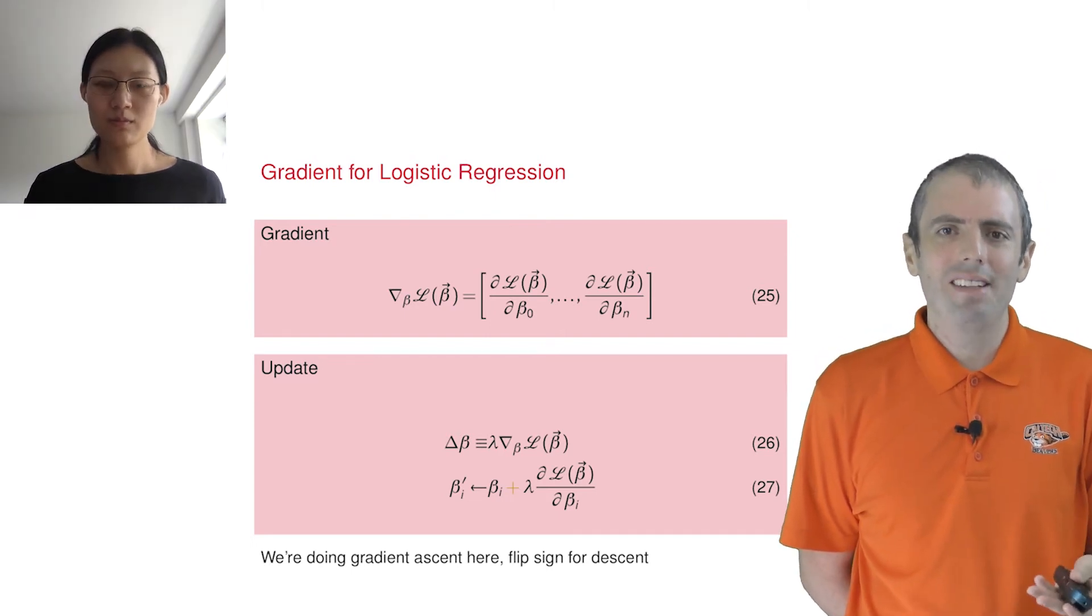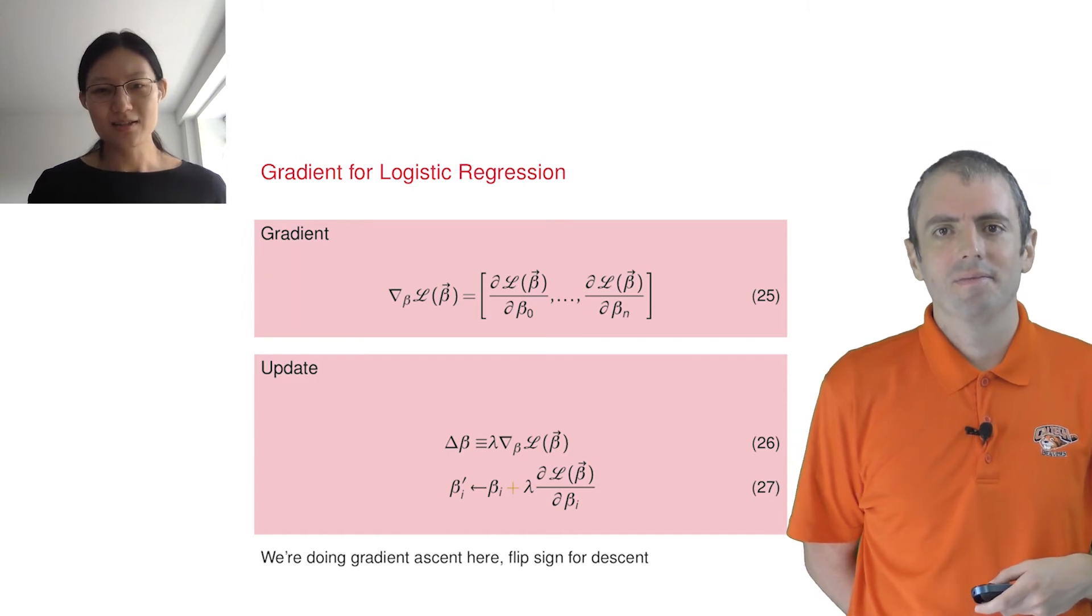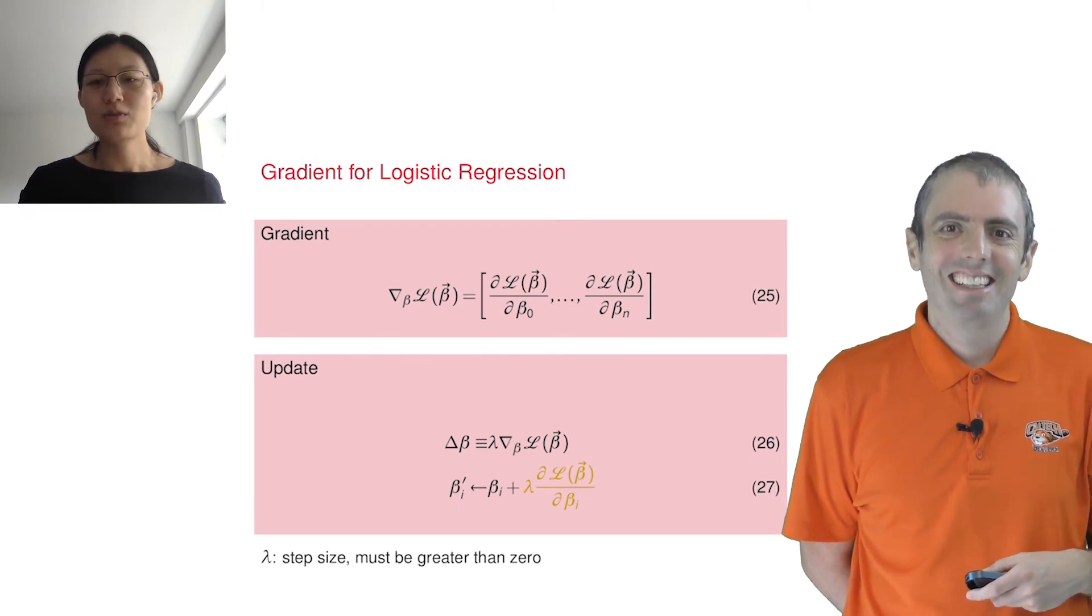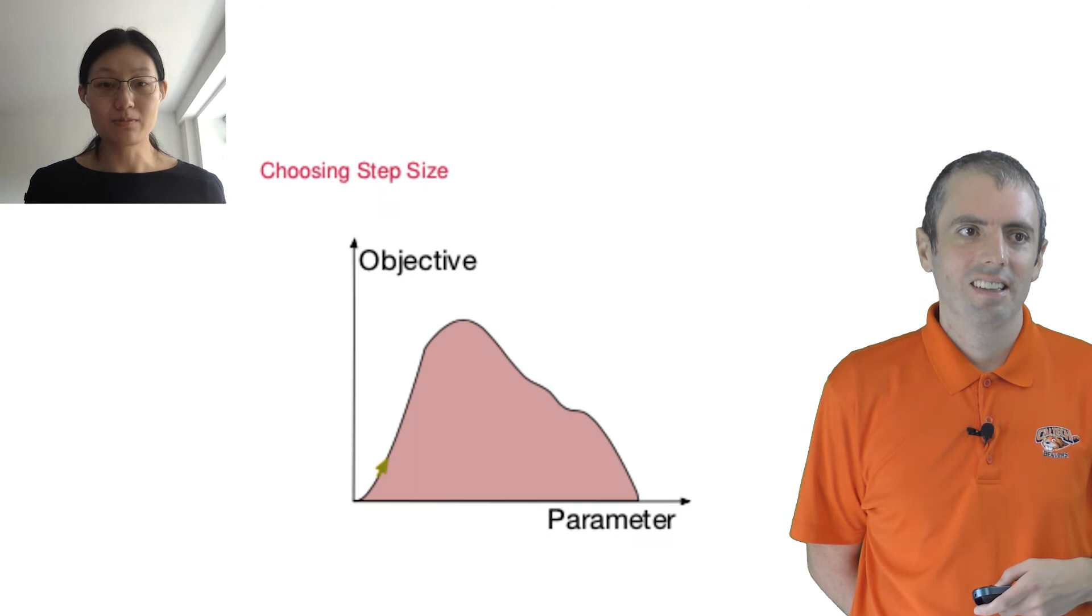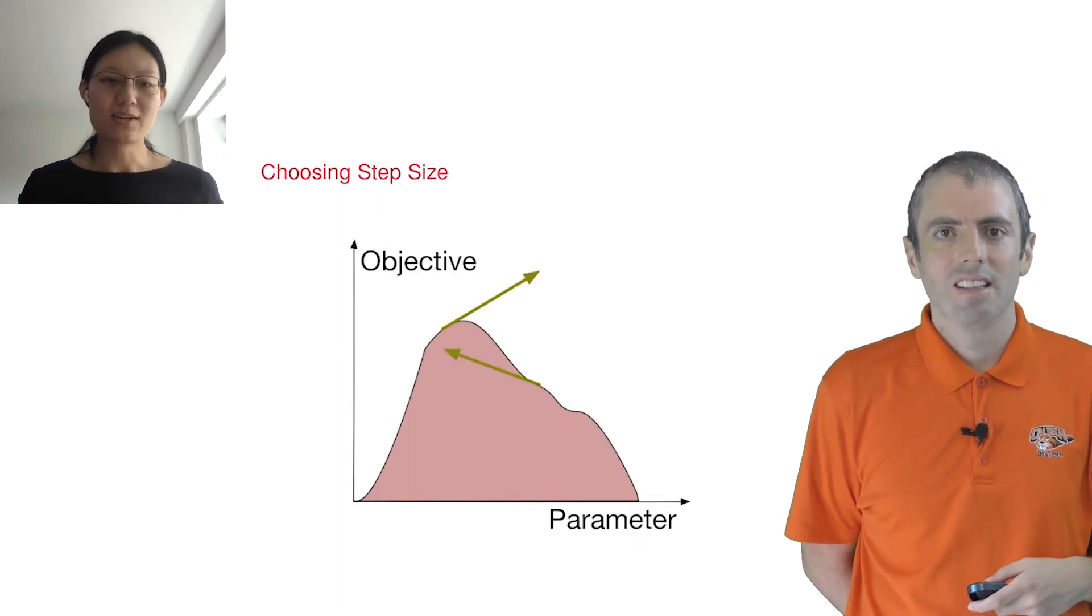So how do you set this step size lambda? Setting the step size, the Greek letter lambda here, is important. If it's too big, you can bounce around either side of the optimum you're looking for. If it's too small, you might never get anywhere near it.